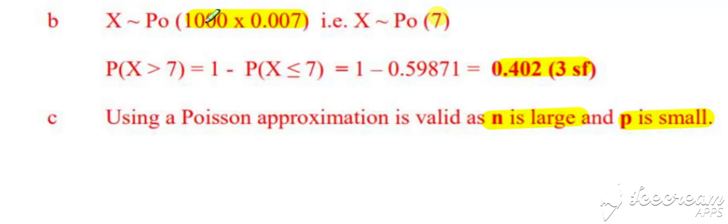Okay, so we want n to be greater than 50, which it is, and n times p to be less than 10, which it is.